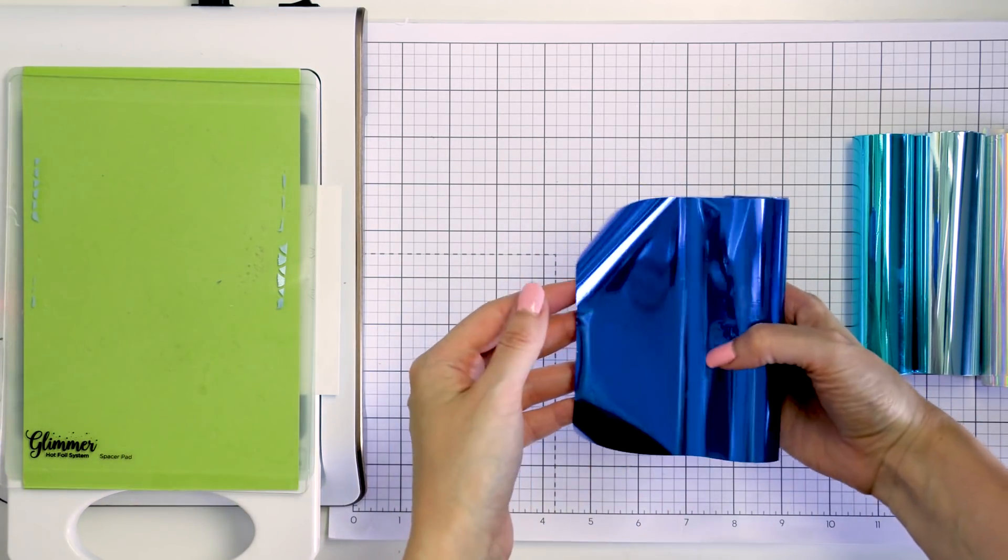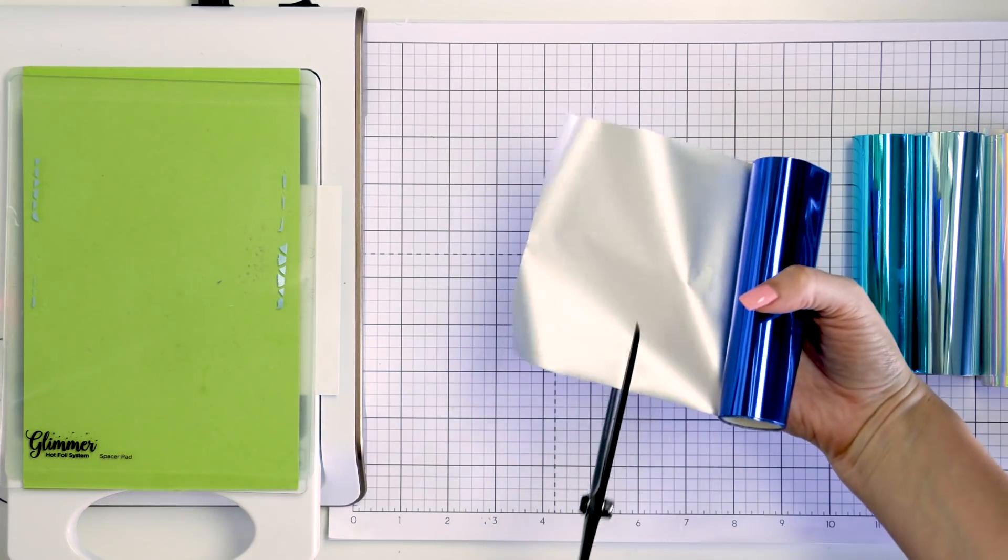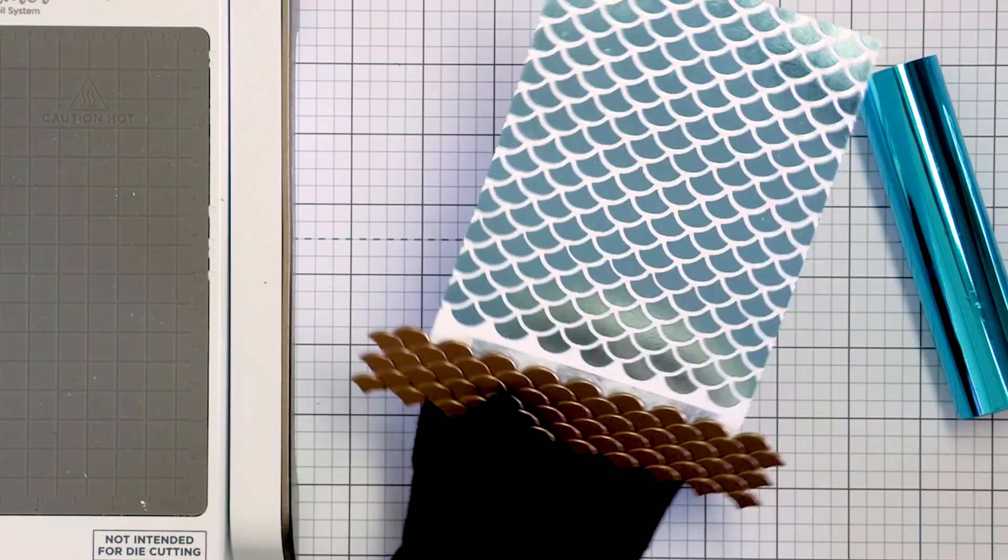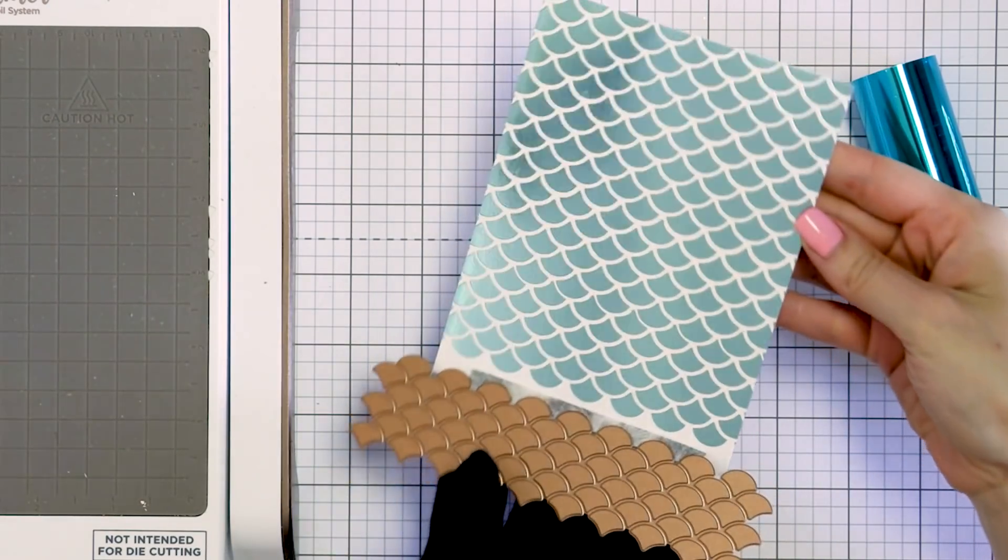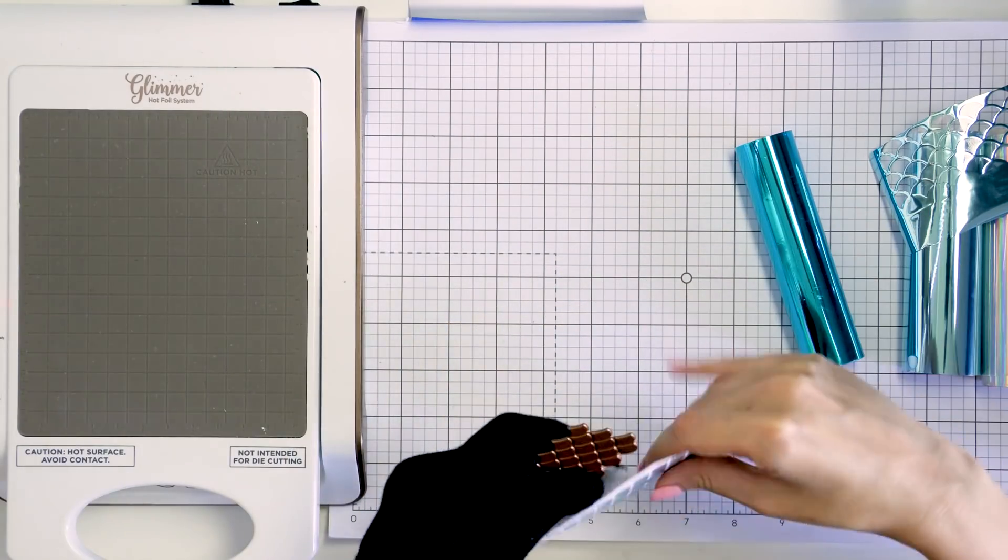Here I have Spellbinders foils in cobalt blue, teal, sky bright and prism. Meanwhile I finished foiling the first background using the sky bright foil alone. I love the result and I just cannot wait to put it on a card.